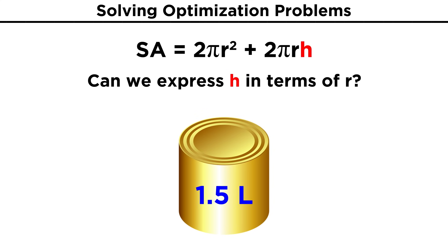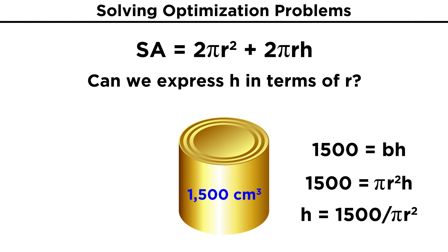Now we would prefer to have everything in terms of r, so what can we do with h? Well, let's recall that we know something about the volume of this cylinder. That must be one point five liters, or fifteen hundred cubic centimeters. How does volume relate to all this? Well, the volume of a cylinder is the area of the base times the height, and in this case, that's πr²h. So let's use this expression to solve for h in terms of r. Dividing both sides by πr², we get fifteen hundred over πr².